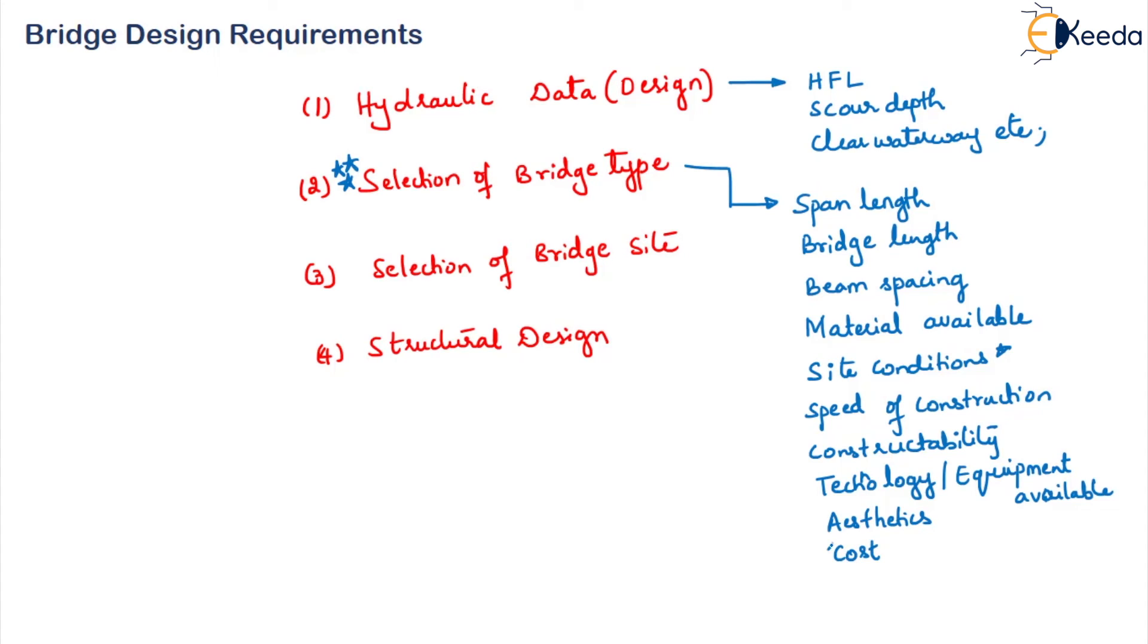Then the cost, how much cost is available for us to design the bridge, that is important. Then is the access for maintenance, so how much of access can we have for the maintenance purpose, that is also an important criteria. So based on all these things we need to select the type of the bridge we want to construct.